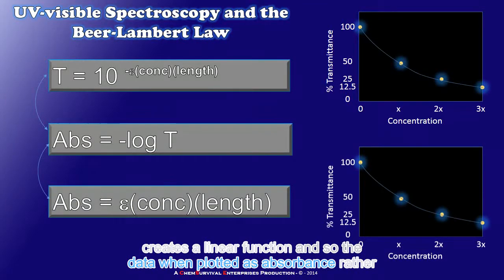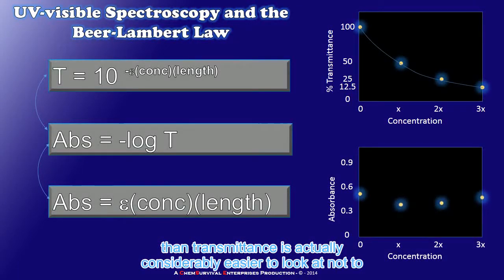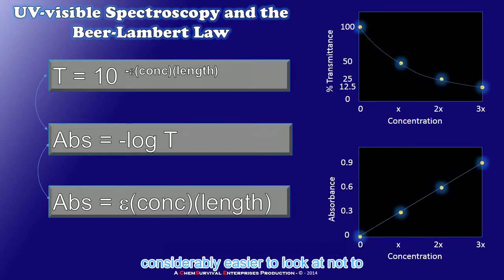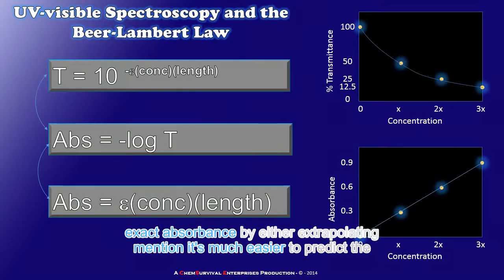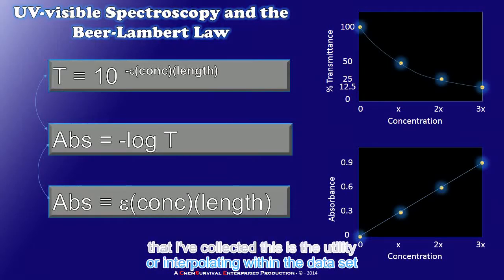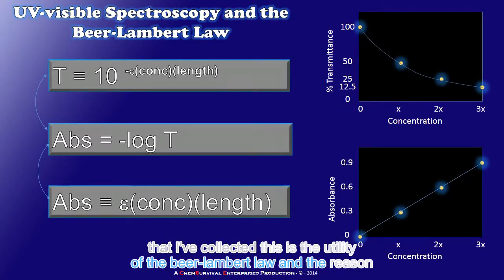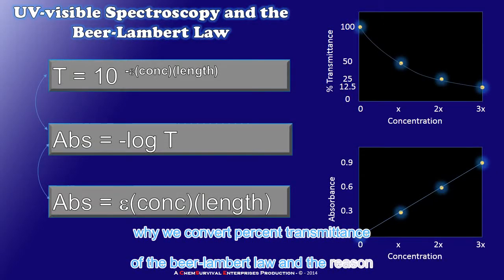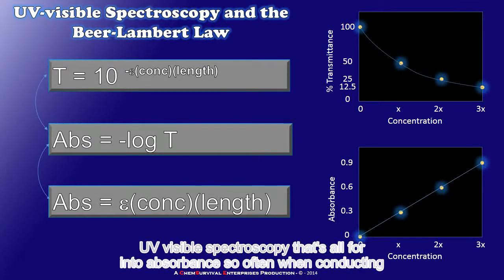Taking the logarithm of an exponential function creates a linear function. And so the data when plotted as absorbance rather than transmittance is actually considerably easier to look at. Not to mention it's much easier to predict the exact absorbance by either extrapolating or interpolating within the data set that I've collected. This is the utility of the Beer-Lambert law and the reason why we convert percent transmittance into absorbance so often when conducting UV visible spectroscopy.